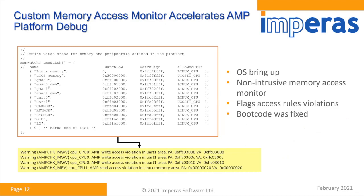The first customer example is firmware development on an ARM-based platform. The goal was to use the virtual platform to bring up the OS and test an AMP (Asymmetric Multi-Processing) OS configuration. The OS was brought up through multiple phases, then the memory access was tested. Since AMP consists of several cores sharing physical memory — each with its own memory space — a short memory access monitor program in C was written to flag access rule violations during simulation.